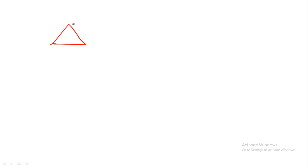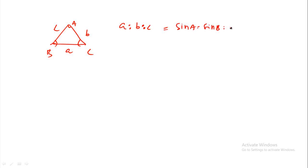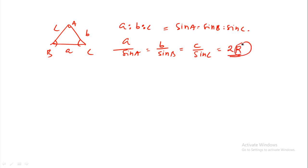In triangle ABC with sides small a, b, c and angles A, B, C: a is to b is to c equals sin A is to sin B is to sin C. This gives a/sin A equals b/sin B equals c/sin C equals 2R, where R is the circumradius.